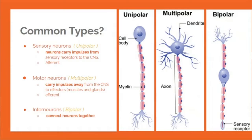There are three common types of neurons. The first is the sensory neuron, which carries impulses from sensory receptors to the CNS — they are called afferent and are unipolar. The second is the motor neuron, which carries impulses away from the CNS to effectors like muscles and glands — they are called efferent and are multipolar. The last is the interneuron, which is bipolar and connects neurons together.